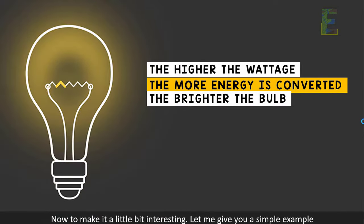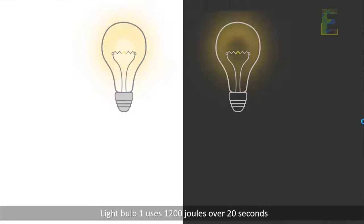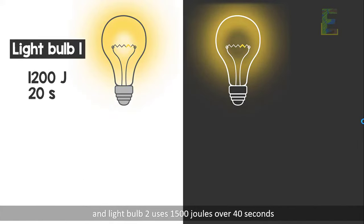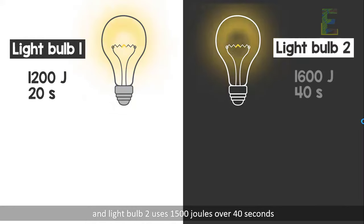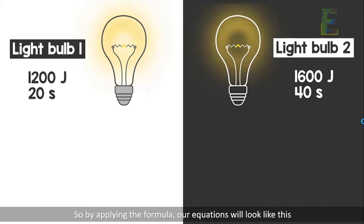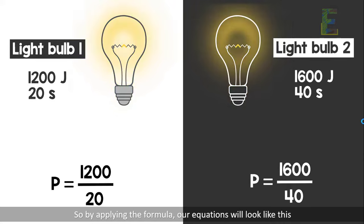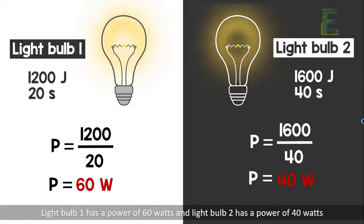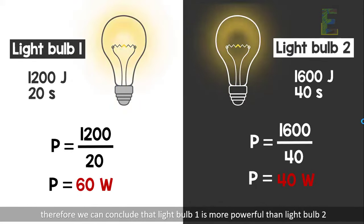Let me give you a simple example. Suppose you have two light bulbs — light bulb one uses 1200 joules over 20 seconds, and light bulb two uses 1500 joules over 40 seconds. Which light bulb is more powerful? By applying the formula, light bulb one has a power of 60 watts and light bulb two has a power of 37.5 watts. Therefore, light bulb one is more powerful than light bulb two.